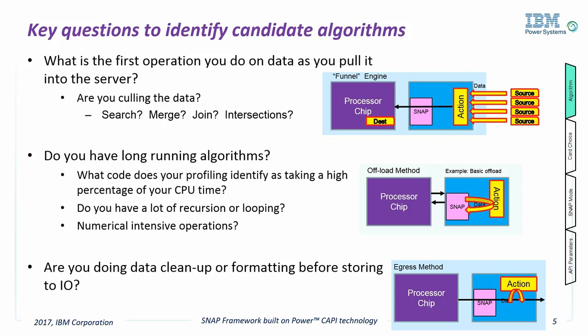If you are pulling lots of data from storage or networks, as with the top diagram, the question to ask is: what is the first operation you do on the data? Server memory is expensive, and you don't want to fill it with data that you don't need. So if you are looking for specific data, or you are culling columns and rows from a database, then consider doing the searching, filtering, or initial database operations on the FPGA. Not only will the FPGA perform the operation faster, but you will also save on memory usage while keeping the PCI Express bandwidth below its maximum.